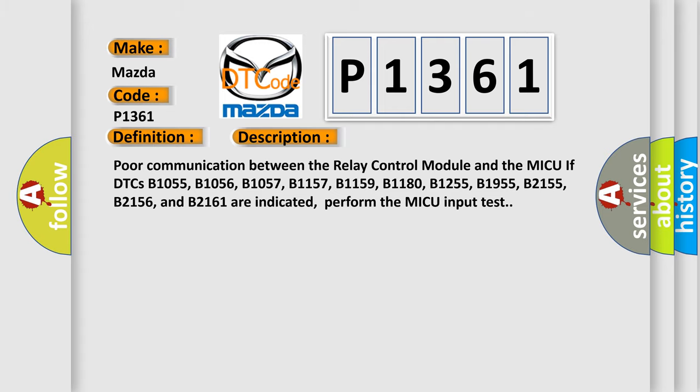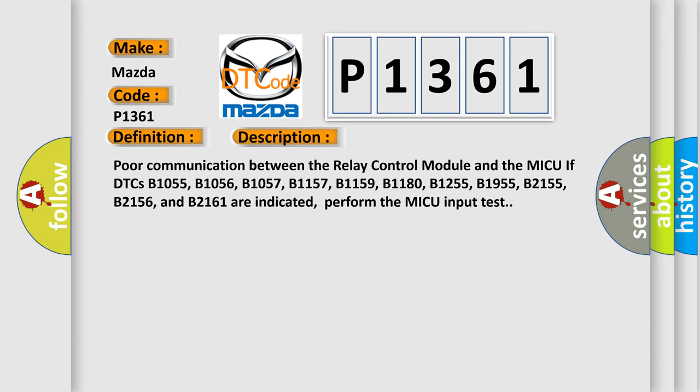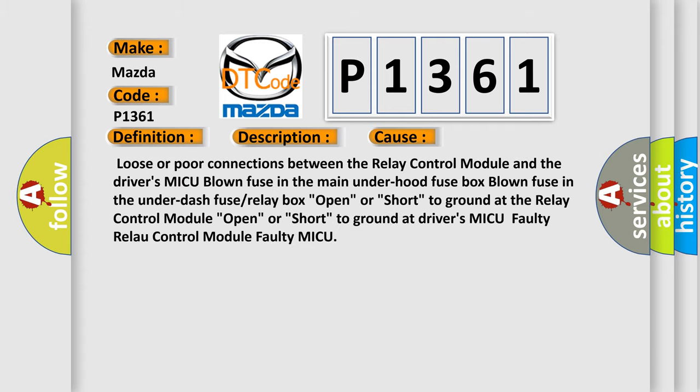This diagnostic error occurs most often in these cases: loose or poor connections between the relay control module and the driver's MICU; blown fuse in the main under-hood fuse box; blown fuse in the under-dash fuse or relay box; open or short to ground at the relay control module; open or short to ground at the driver's MICU; faulty relay control module; or faulty MICU.